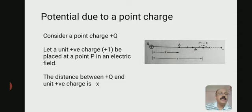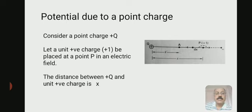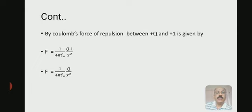Around that charge, an electric field is present. We take a point A at a distance r. Now, to point A we are bringing another unit positive charge, that is plus one, at a point P in an electric field. The distance between plus Q and the unit positive charge is X, as shown in the figure.